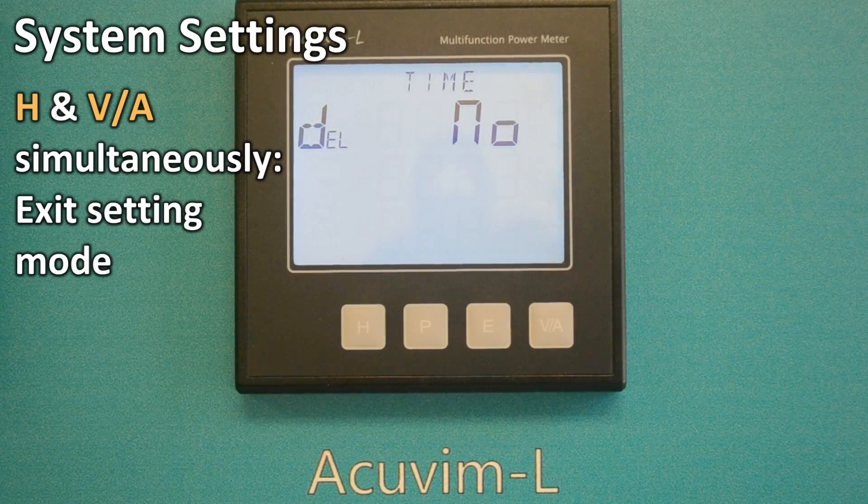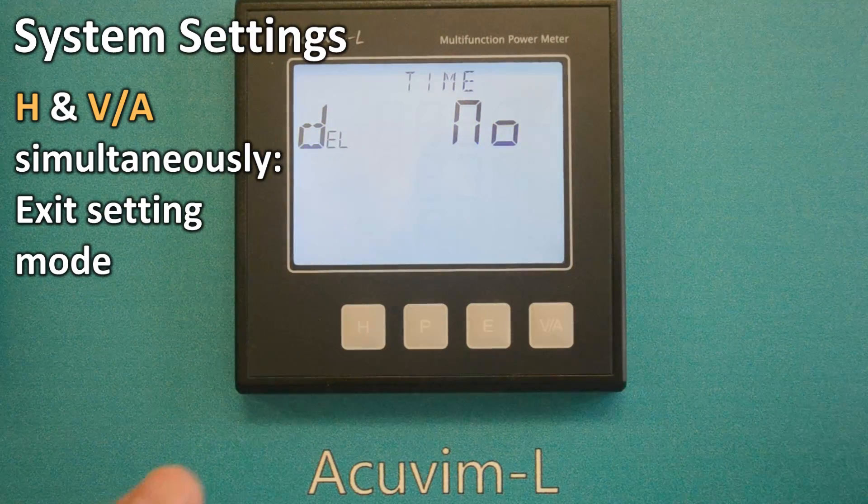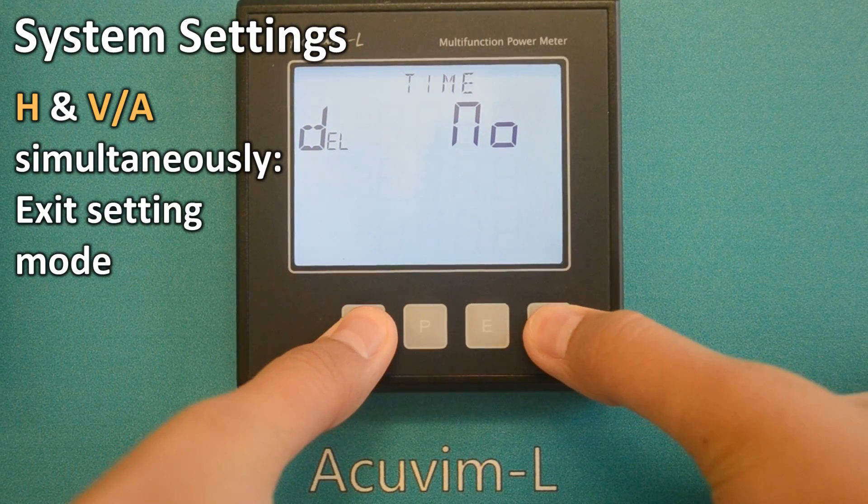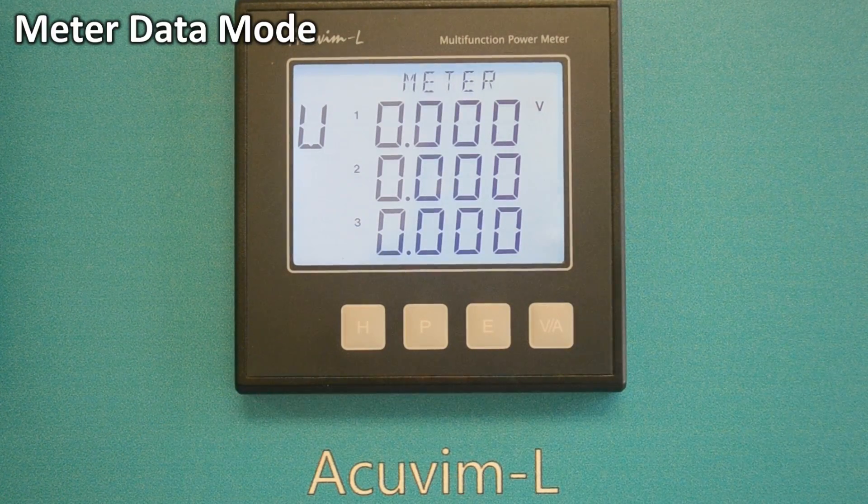To exit the parameter setting mode, press the H and VA simultaneously, and the screen will return to the metering data mode.